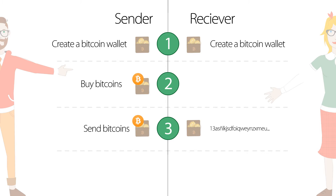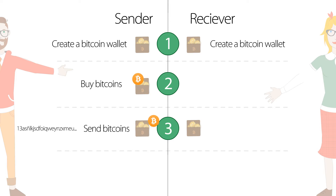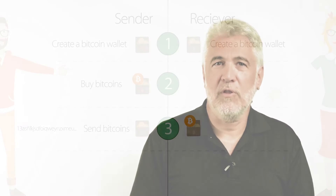Wallets are getting better at sharing wallet addresses. You can send that address by email, text, or even a QR code image. With the address, the sender then remits the Bitcoin he or she wants to the receiver's wallet. And in a matter of minutes, the receiving wallet gets credited with the Bitcoins sent, and the sending wallet gets debited.